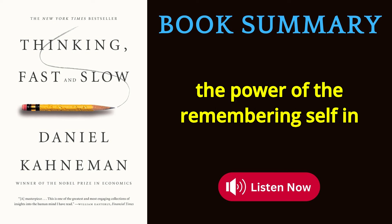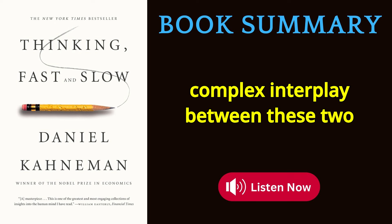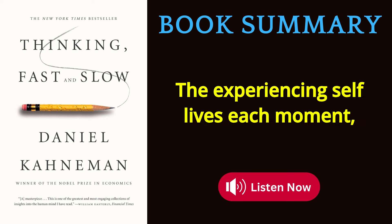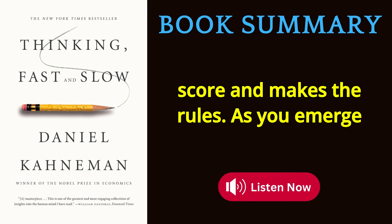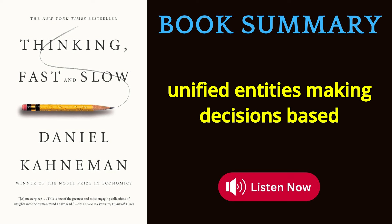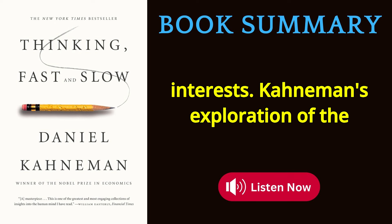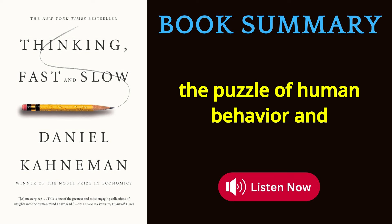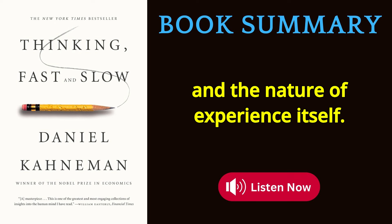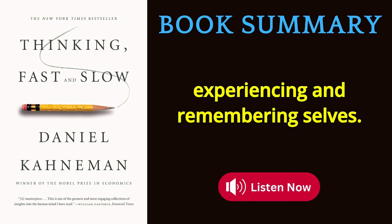Kahneman illuminates the complex interplay between the two selves, showing how this duality influences everything from daily choices to life's biggest decisions. The experiencing self lives each moment, but it's the remembering self that keeps score and makes the rules. We are not unified entities making decisions based solely on experience — we are complex beings with two selves that often have conflicting interests. Armed with these insights, we can better understand our own choices, reassess our priorities, and find ways to balance the needs of both selves.